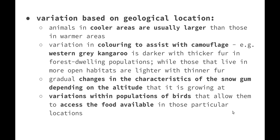There are also gradual changes in the characteristics of the snow gum, a tree that grows in cold climates. Depending on the altitude it's growing at, as we get higher, the branches get thicker to handle the weight of snow, the trunk changes colour, and the leaves drop at different times compared to those at lower altitudes.